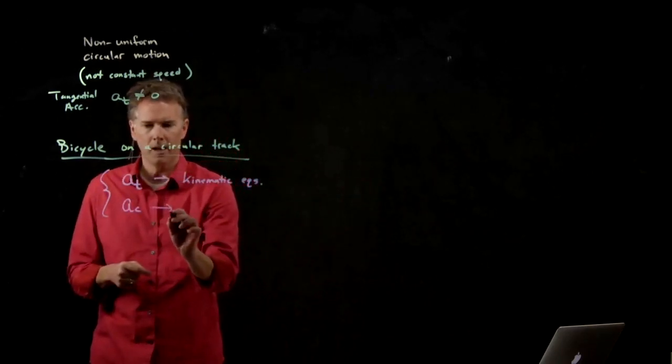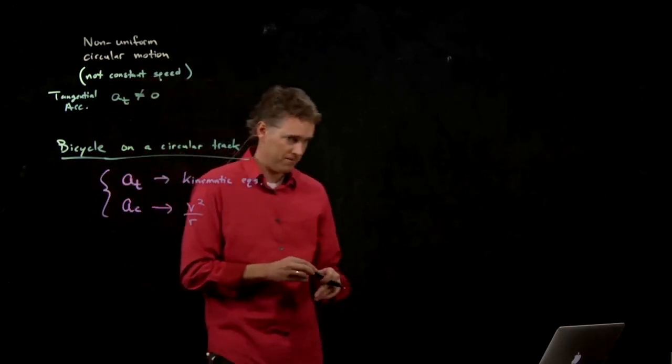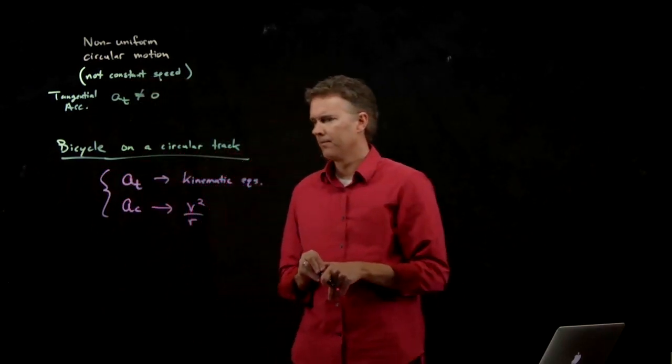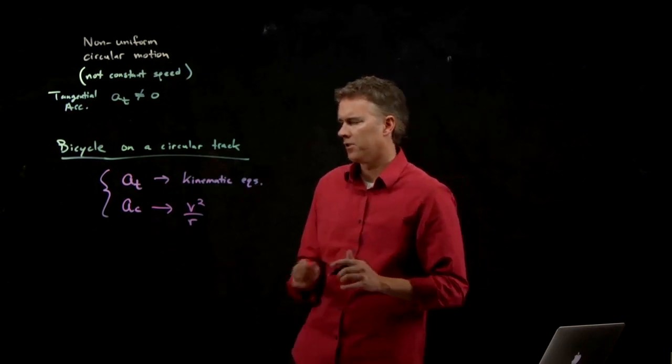a_c, we know what that is. That is v squared over r. So let's think about the bicyclist on the circular track.